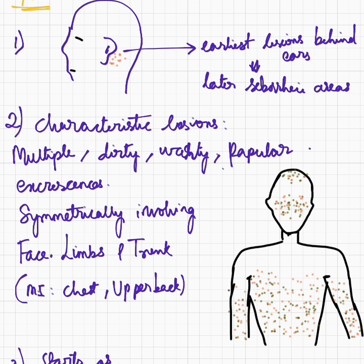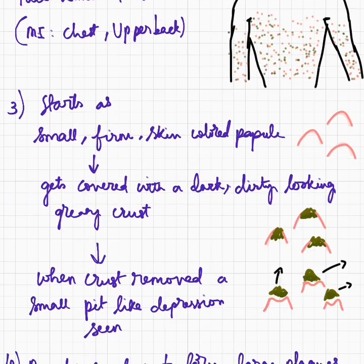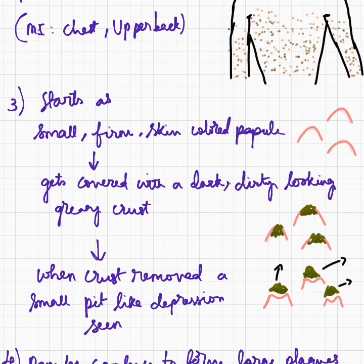Sometimes these papules may coalesce to form plaques as well. The characteristic lesions in Darier's disease are multiple, dirty, warty papular excrescences, and they are symmetrically present involving the face, limbs, and trunk, most importantly affecting the chest and upper back. They start as small firm skin-colored papules which later get covered with a dark dirty-looking greasy crust, and when this crust is removed a small pit-like depression can be seen.